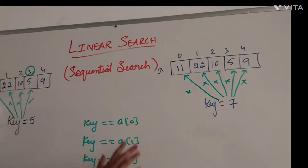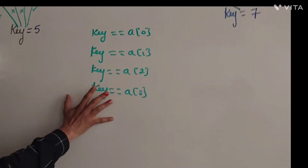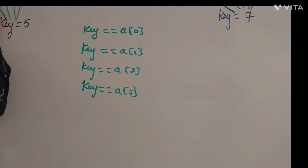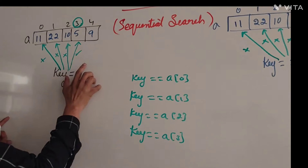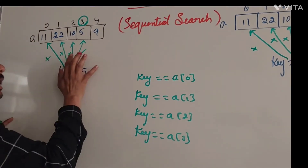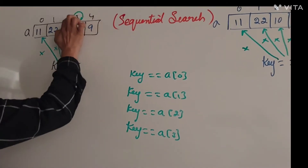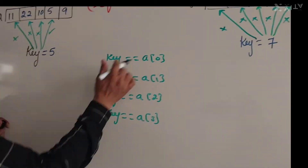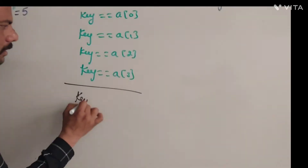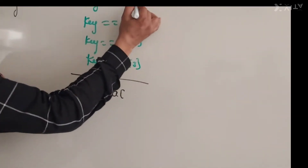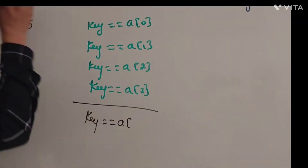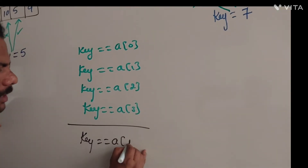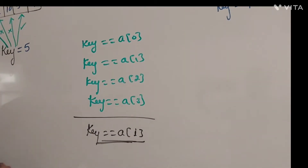For this process we need to write an algorithm. The steps are: compare the key element with array elements one after another in serial fashion; if found anywhere, stop and return the position where the key element was found. The operation we do is: key is equal to a[i], where i goes from zero, one, two, three up to the last position.